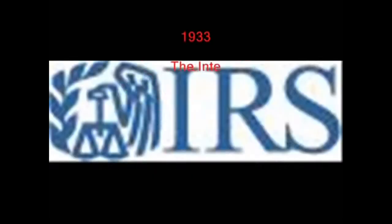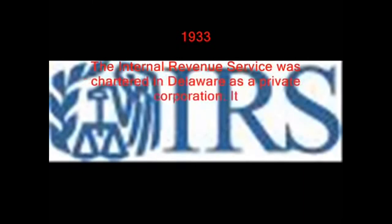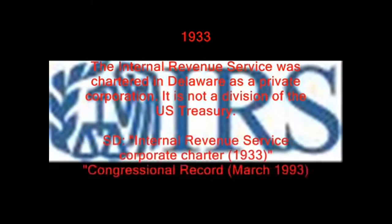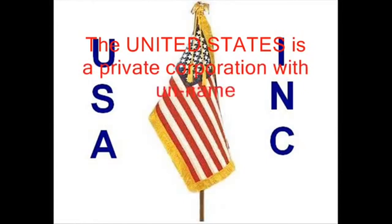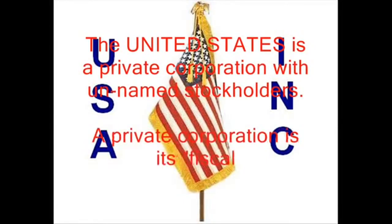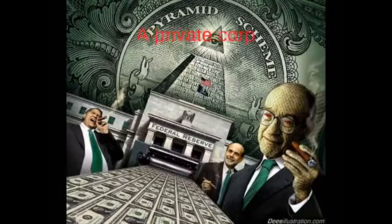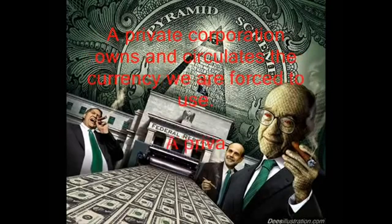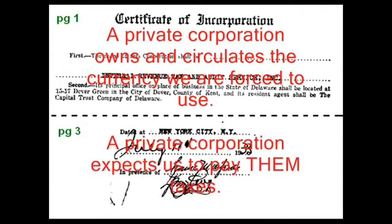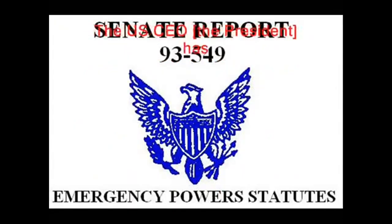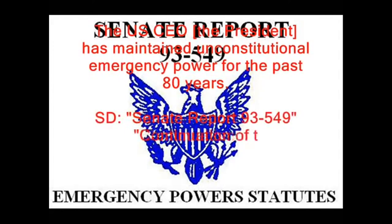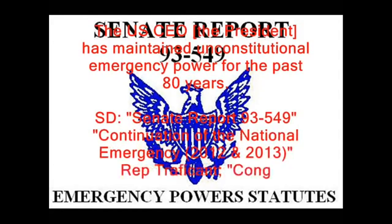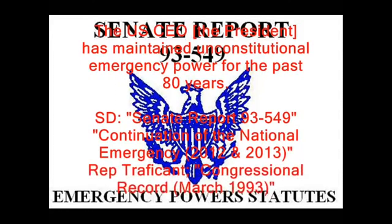1933: The Internal Revenue Service was chartered in Delaware as a private corporation. It is not a division of the U.S. Treasury. Source document: Internal Revenue Service Corporate Charter, 1933. The United States is a private corporation with unnamed stockholders. A private corporation is its fiscal agent. A private corporation owns and circulates the currency we are forced to use. A private corporation expects us to pay them taxes. The U.S. CEO — the President — has maintained unconstitutional emergency powers for the past 80 years. Source documents: Senate Report 93-549, and Continuation of the National Emergency, 2012–2013.